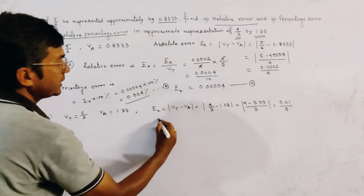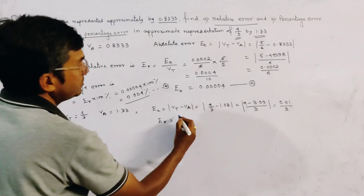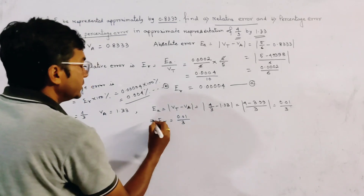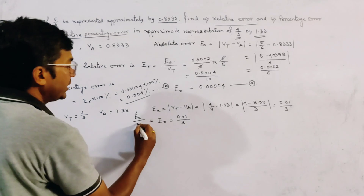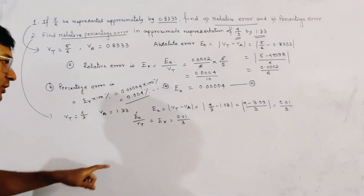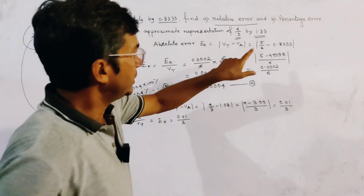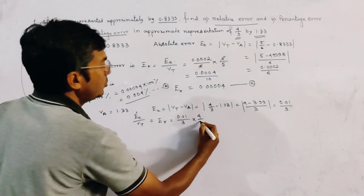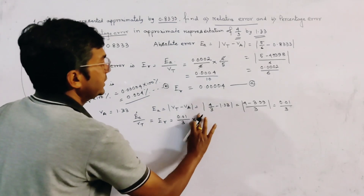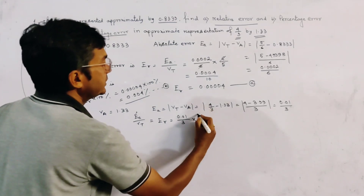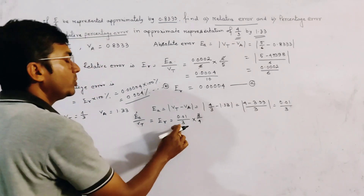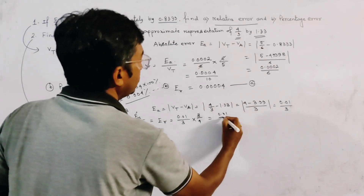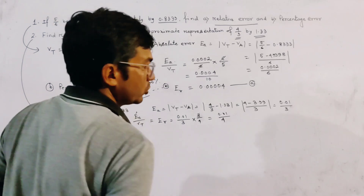Now, relative error Er is given by Ea divided by Vt, which is (0.01/3) divided by (4/3). Since 4/3 is in the denominator, we multiply by 3/4. The 3s cancel out, giving us 0.01/4. So the relative error is 0.01/4.